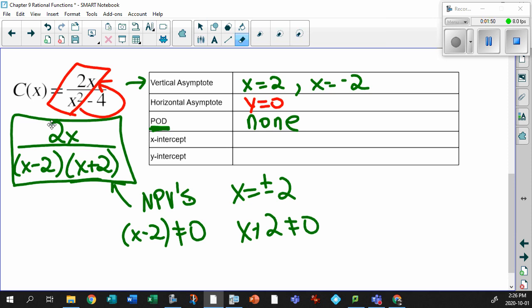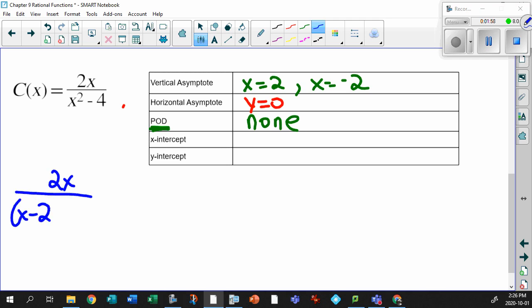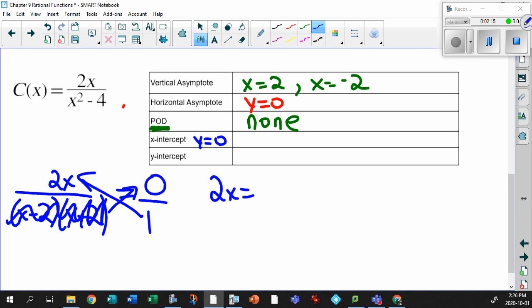X-intercept time. Okay, let me clean this up and start it again. Remember the factored form: 2x over x minus 2, x plus 2. Remember, this equals 0. When an x-intercept happens, y equals 0 over 1. This guy gets, guess what? Multiplied with 0, it's gone. This guy gets multiplied with 1. So this is 2x equals 0, divided by 2, divided by 2. x, in fact, equals 0.